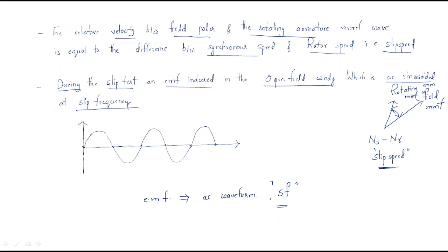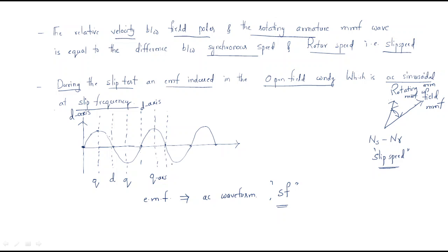Look at the diagram here. The EMF is induced — this is the direct axis EMF, and now it is the quadrature axis EMF. The direct axis EMF will be zero and the quadrature axis EMF will be maximum. Again, in the direct axis the EMF will be zero and the quadrature axis EMF will be minimum. This EMF is an AC waveform at slip frequency. Generally, the rotor in a synchronous motor is always driven at less than synchronous speed.